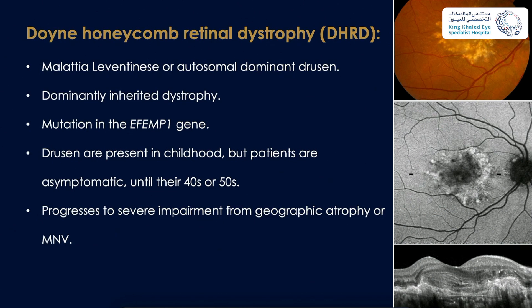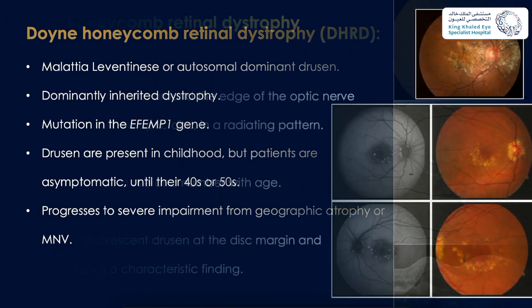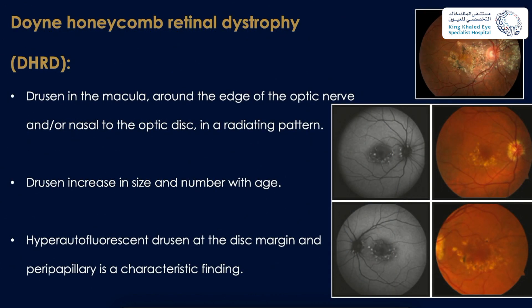Doyne honeycomb retinal dystrophy, also called Malattia Leventinese or autosomal dominant drusen, is a dominantly inherited dystrophy caused by mutation in the EFEMP1 gene. Drusen are present in childhood but patients are asymptomatic until their 40s or 50s, usually progressing to severe impairment from geographic atrophy or macular neovascularization. Drusen can be seen at the macula, around the optic nerve edge, or nasal to the disc in a radiating pattern, and hyperautofluorescent drusen at the disc margin and prepapillary are a characteristic finding.